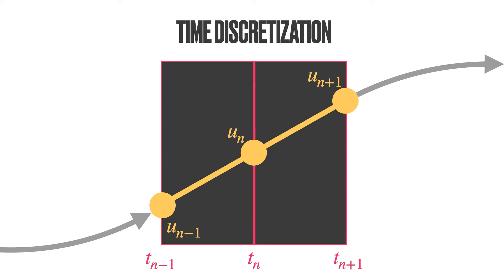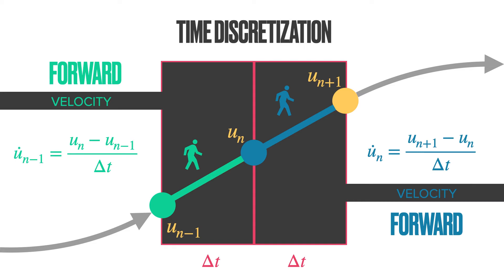Here is our discrete timeline. We have three discrete points in time. Let us recap. Here is the forward Euler approximation that uses the displacements at UN plus 1 and UN to approximate the velocity at time UN.